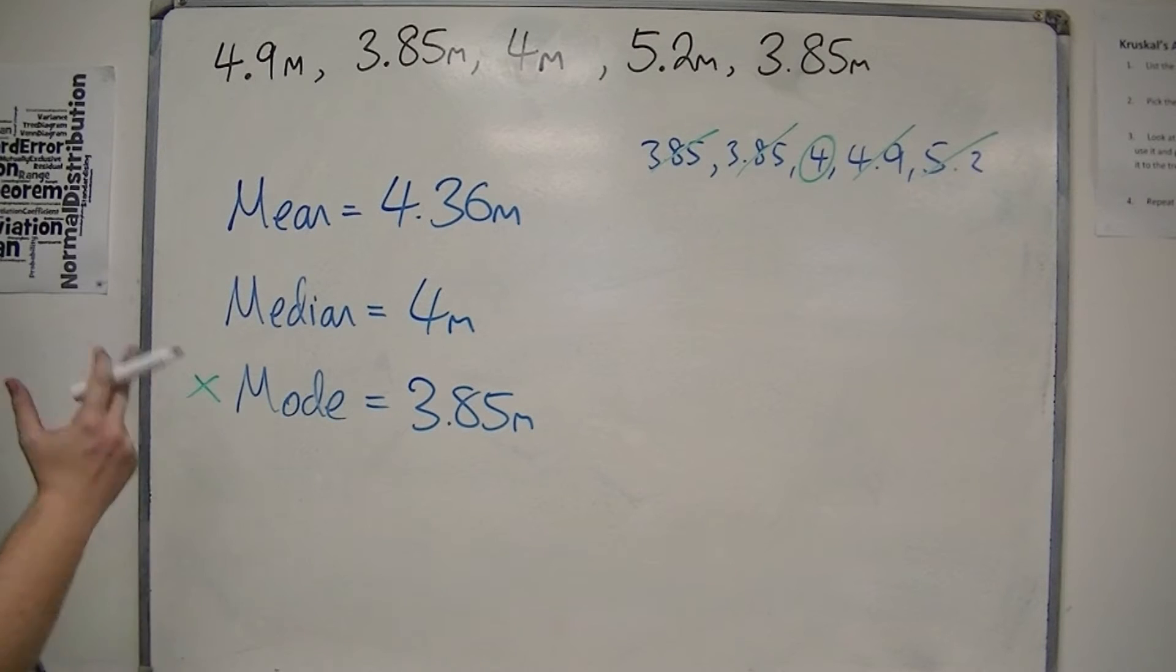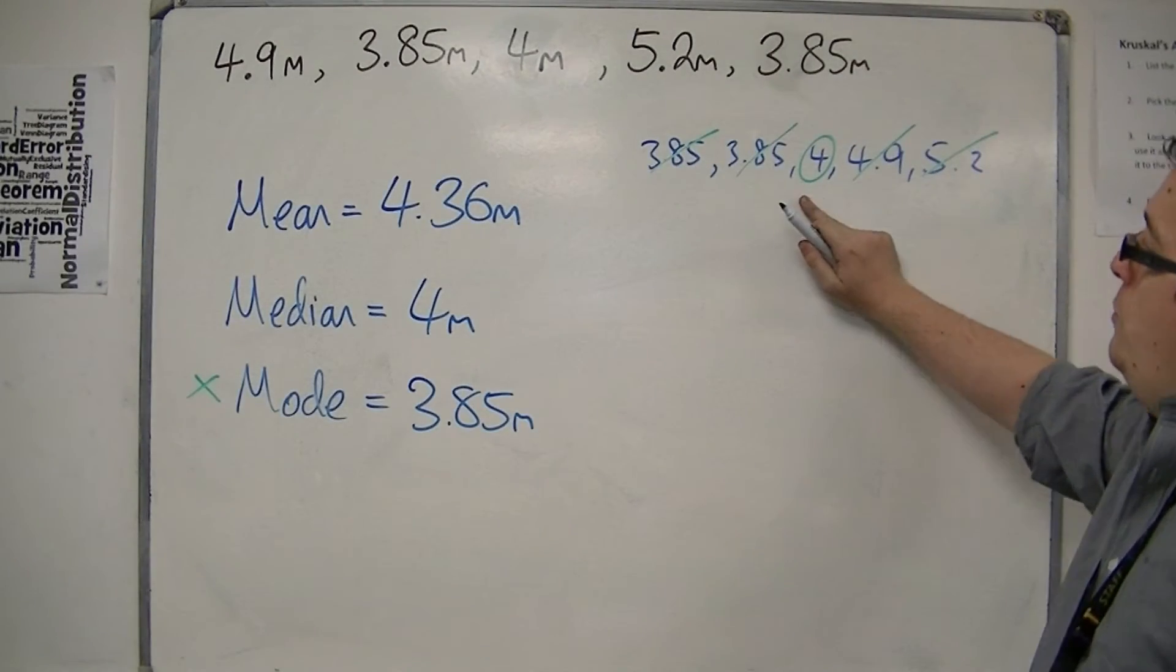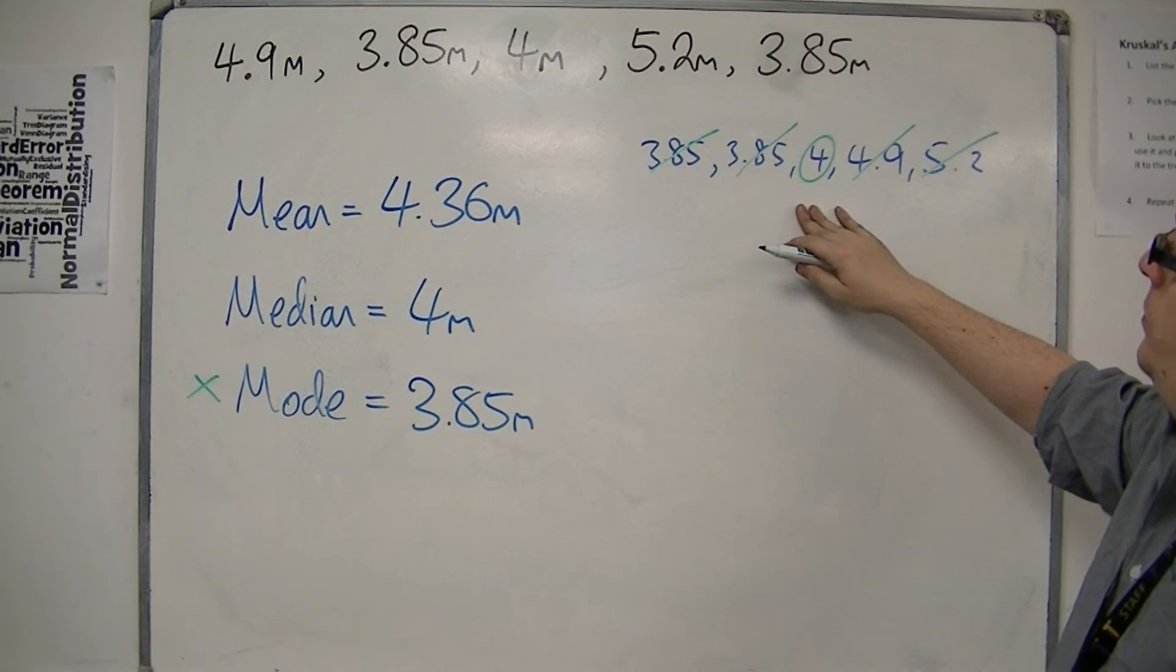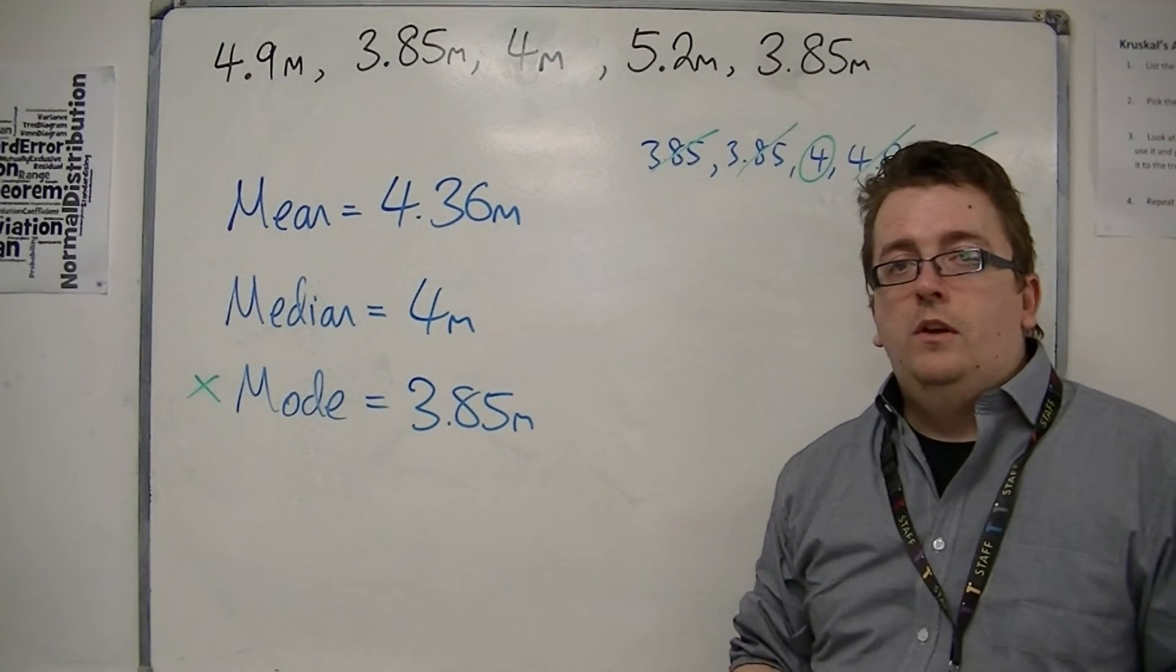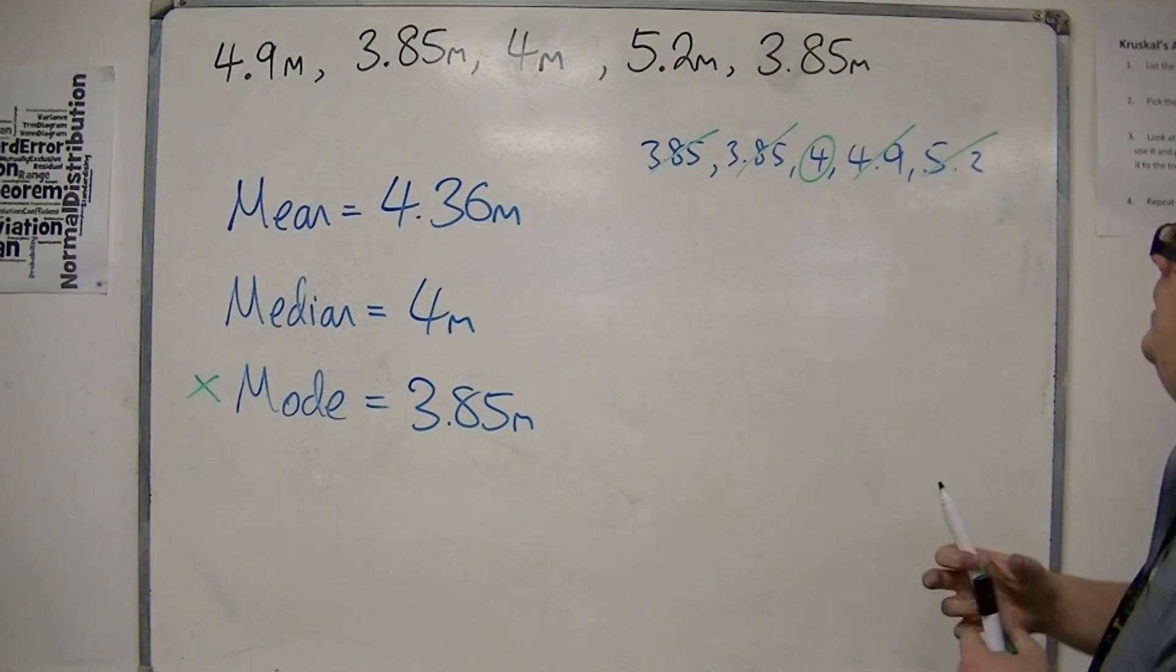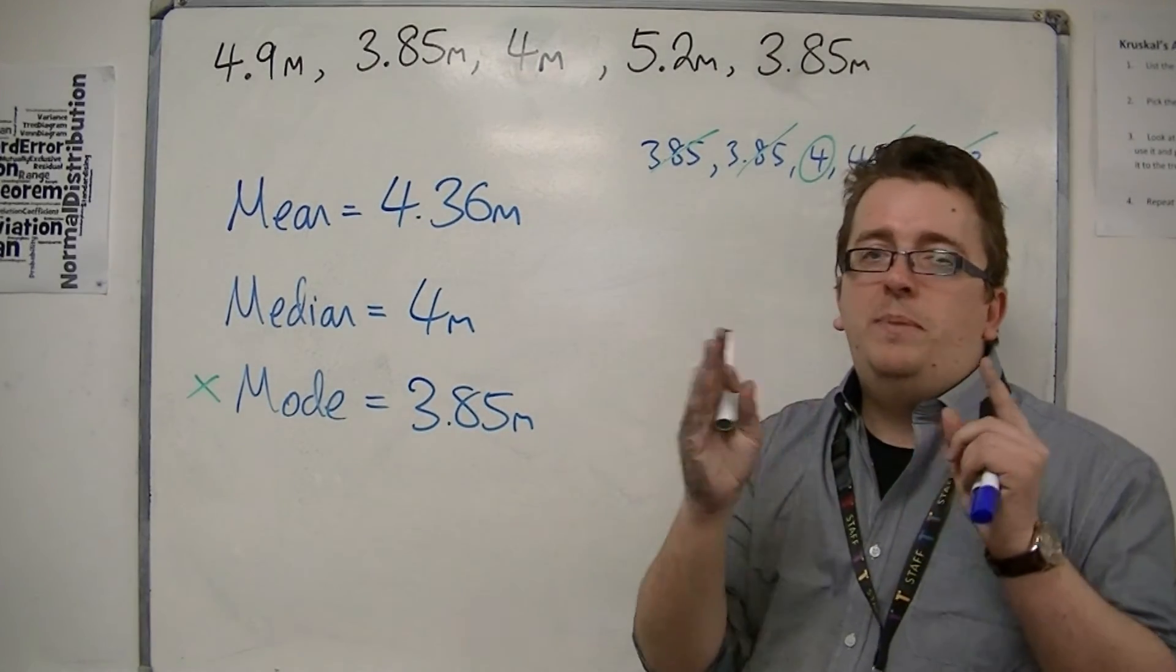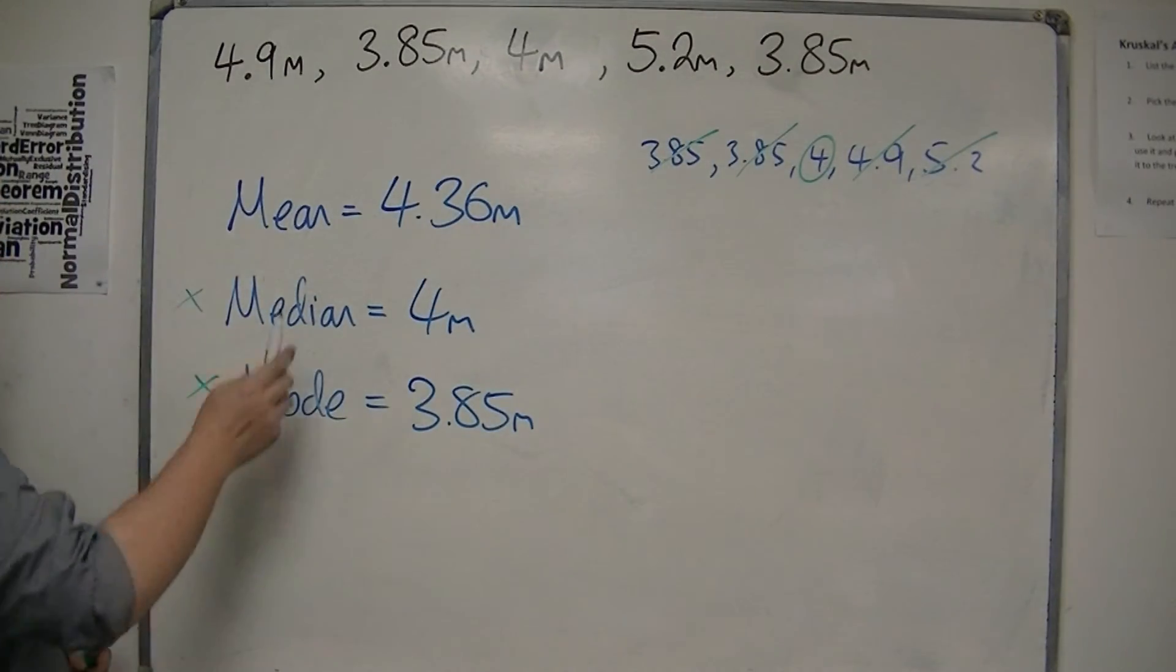Then we've got the median. Now, the median is 4 metres, and what we have here is that although that seems to be all right, there are problems in the sense that it does seem a little small to be the average for these five numbers. 3.85, 3.85, and 4, they're all quite close together, and then you've got two taller trees, 4.9 and 5.2. It doesn't seem quite to be the average. It's all right, but it's not particularly strong.